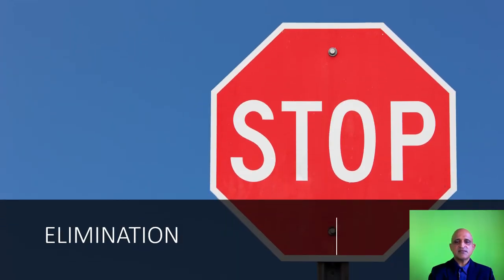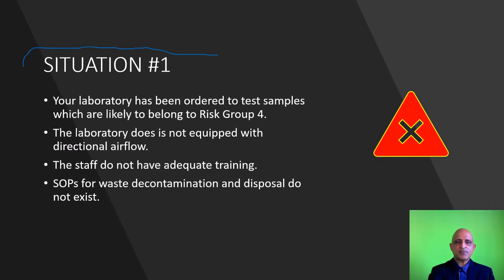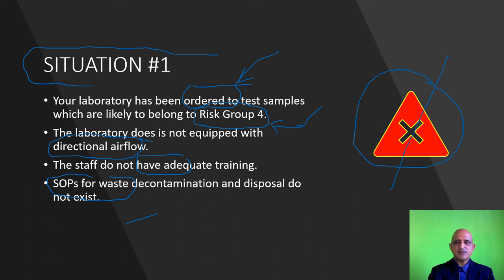The first control is elimination. Consider this situation: your laboratory has been ordered to test samples which are likely to belong to risk group 4, such as during a pandemic. However, your laboratory is not equipped with directional airflow, you do not have a containment facility, staff do not have adequate training, and SOPs for waste decontamination and disposal do not exist. With these multiple limitations, it is highly likely there will be a breach of containment. In this case, we resort to elimination — a collective decision not to proceed with the laboratory procedure.